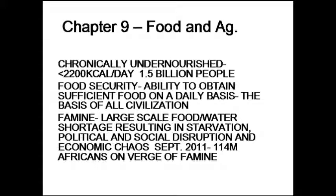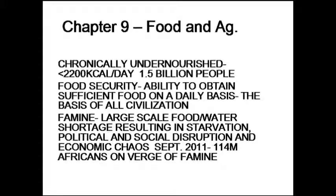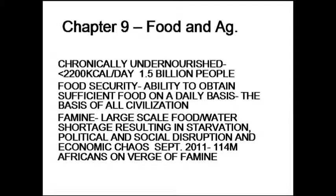Food security is something that most of us in the United States don't worry about — but plenty do. It is the ability to obtain sufficient food on a daily basis, which is really the basis of all civilization. Think about it: if you were a hunter-gatherer 9,000 years ago, you'd be going out hunting and gathering — that's your life. Today, we go to the food market, we have prepared foods, and hence there's time for math and science and art and music — the things that qualify us as human beings, the meaning of civilization. Food security means you know where your next meal is coming from.